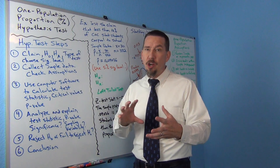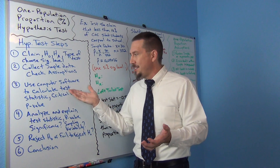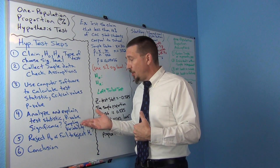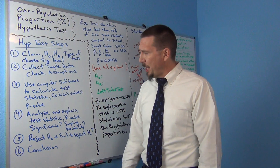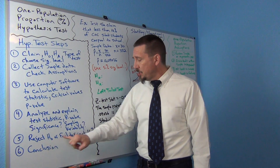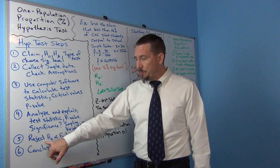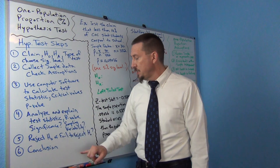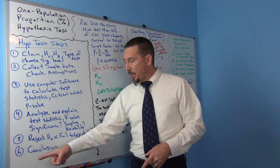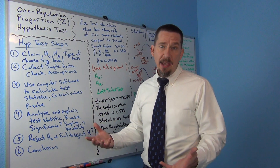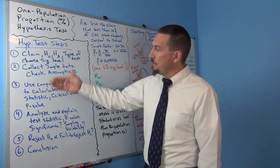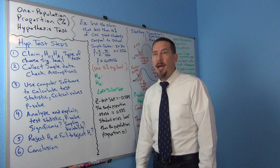Once everything is calculated, then comes the hard part. You have to figure out what does all this mean — what is the test statistic telling me, what is the p-value telling me, what do I know about significance, and what sampling variability is involved? That's really the analysis part. We can either reject the null hypothesis or fail to reject it. If the p-value is lower than the significance level, we reject the null hypothesis. If the p-value is higher, we fail to reject it. We also write a formal conclusion that addresses the claim and evidence.